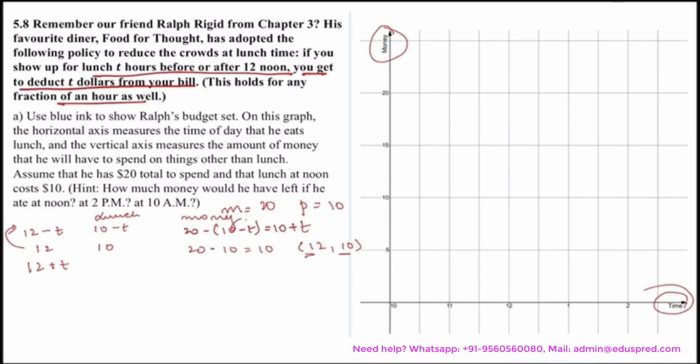If he shows up t hours after noon, his cost for lunch is 10 minus t. And money left for other stuff would be 20 minus 10 minus t, that is 10 plus t. This is nothing but (12 plus t, 10 plus t).